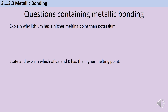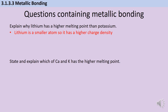In the first part of the question, we're asked to explain why it is that lithium has a higher melting point than potassium. These are both group 1 elements, so they're both going to form ions with a single positive charge. So this isn't about the charge on the ions — it's about the size of them. Lithium, being in period 2, is obviously a smaller ion, and therefore it has a higher charge density.